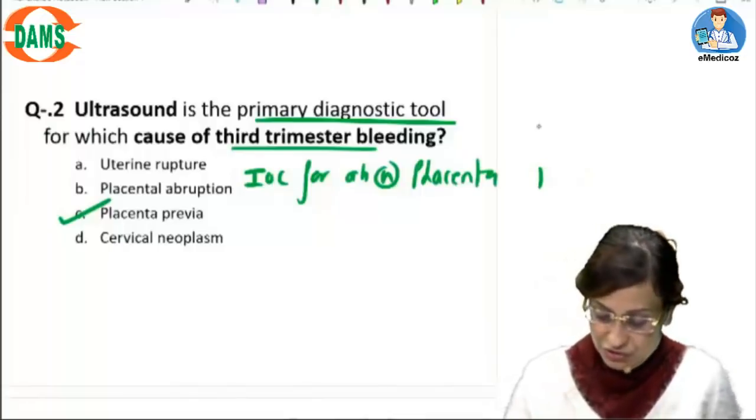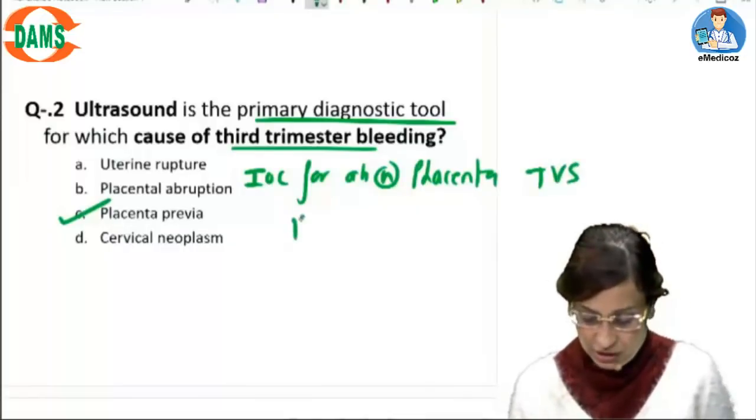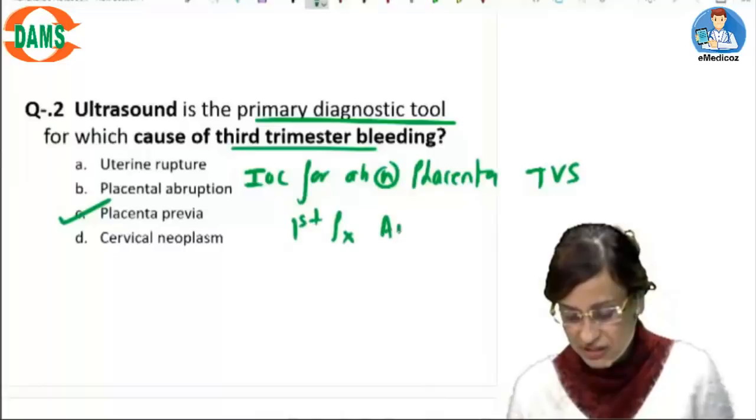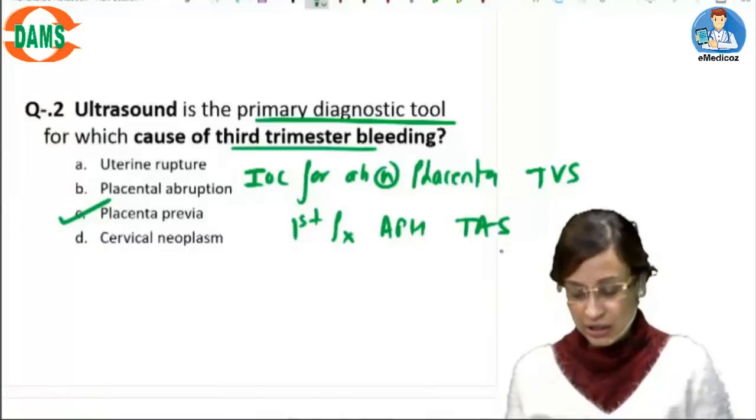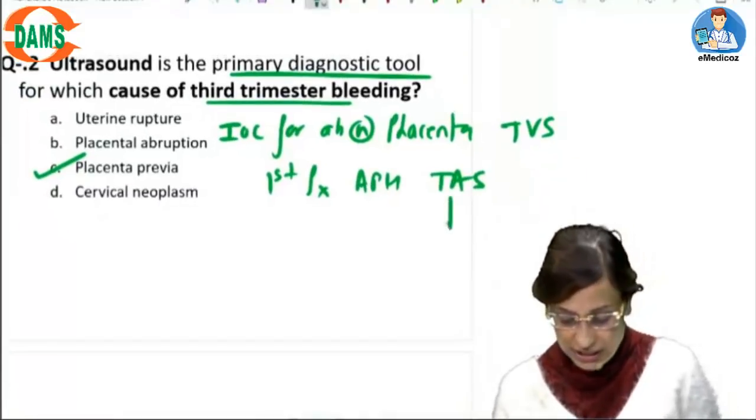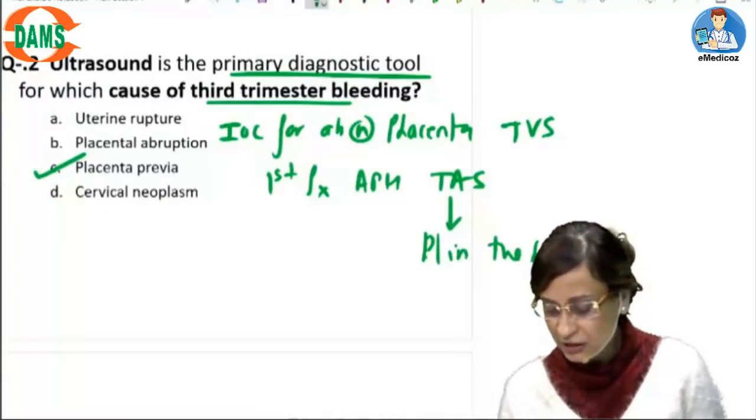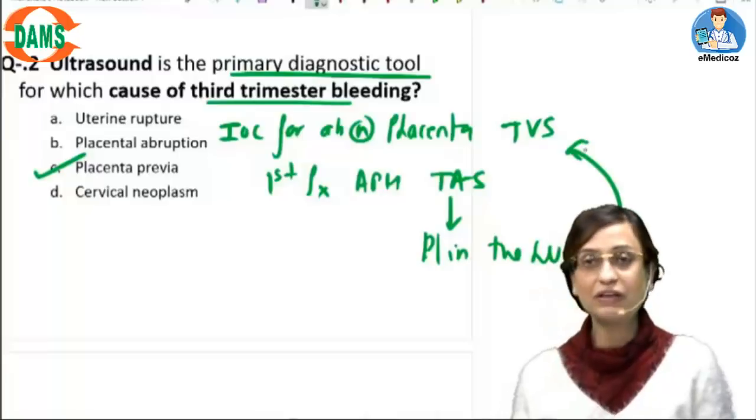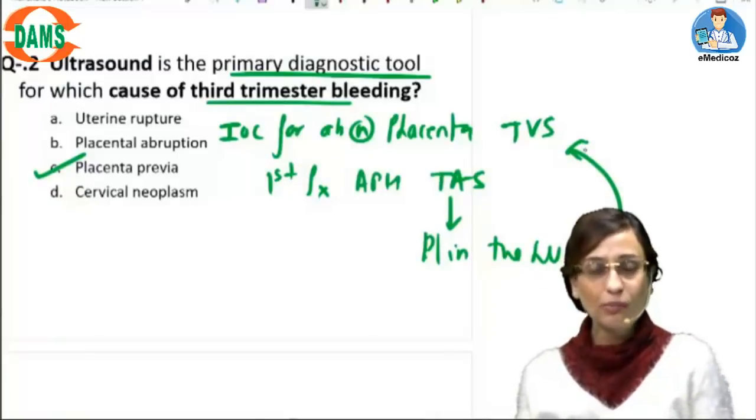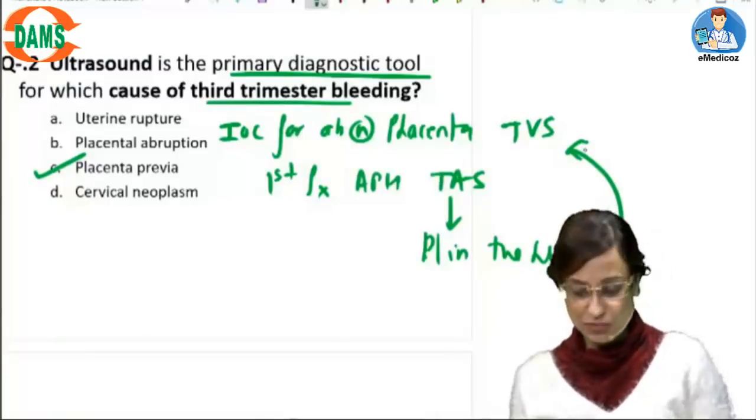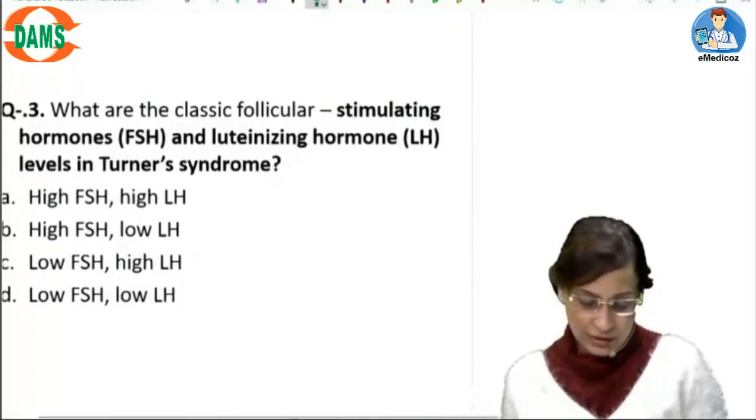Whereas if we ask you the first investigation for a patient who presents with APH will be transabdominal scan. And all patients on TAS, if they have a placenta in the lower segment, then they need to undergo a TVS. So IOC for abnormally located placenta is going to be transvaginal ultrasound.